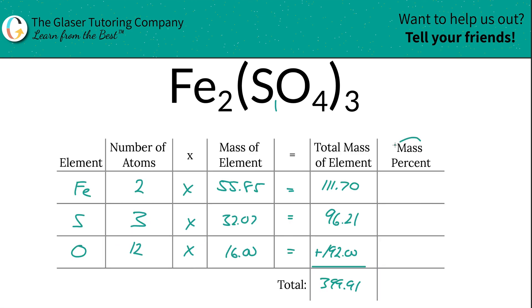To calculate the mass percent of iron, take the total mass of iron (111.70) and divide it by the total mass of the entire compound (399.91), then multiply by 100. This is a simple percent calculation: part over whole times 100. The units cancel, so we get a percentage of roughly 27.93%.